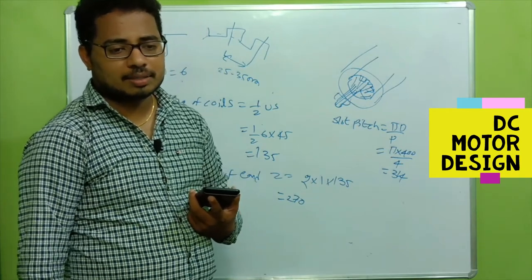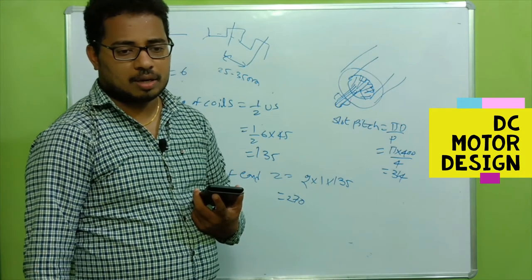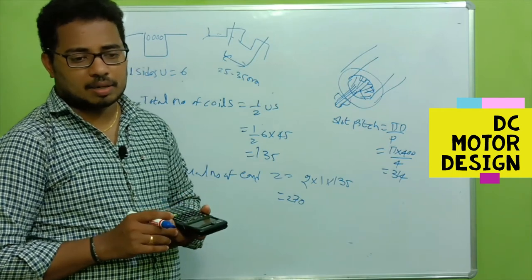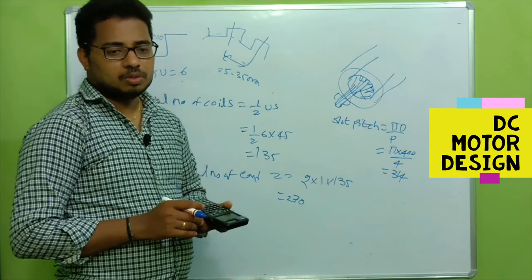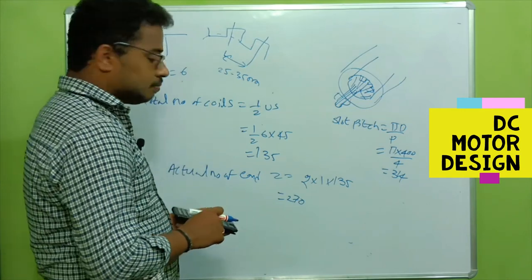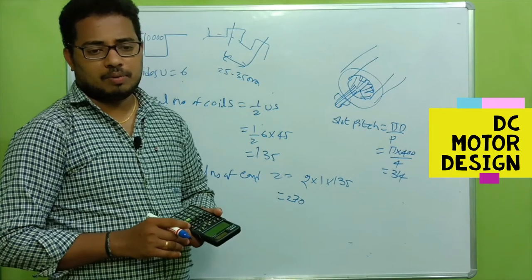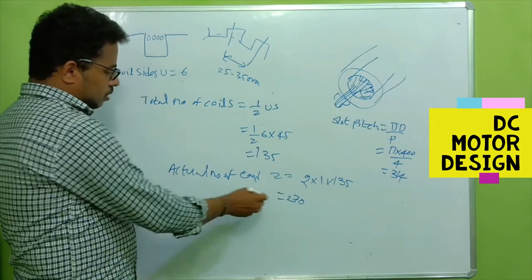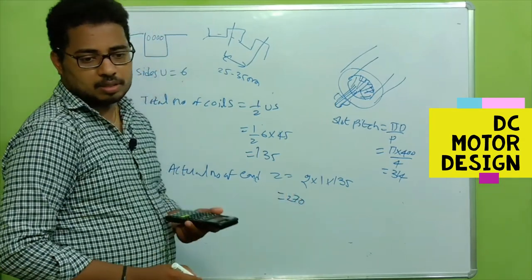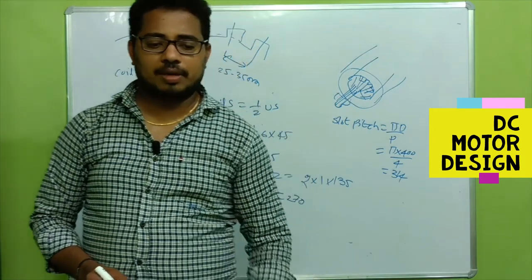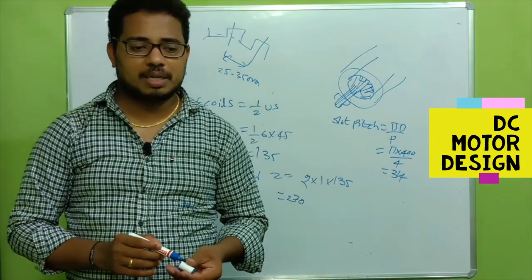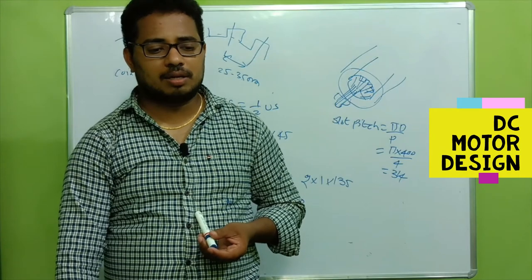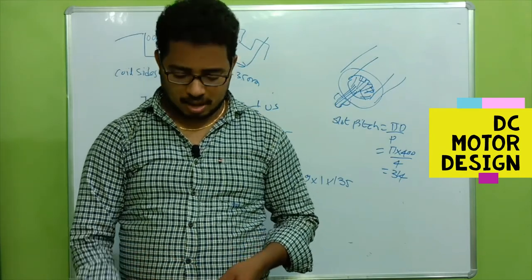There is only a slight difference between the actual conductors and the earlier calculated value. We previously calculated 257 conductors using the flux per pole method, and now we get 270. That covers the number of slots calculation. In the coming video, we will calculate the size of the slot and the size of the conductor. Thank you.